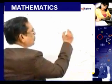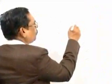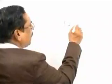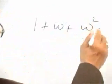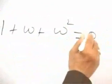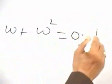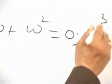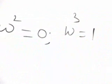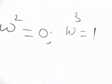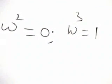Also the result: 1 plus omega plus omega squared equals 0, and omega cubed equals 1. This result must come to your mind.